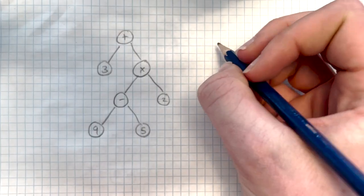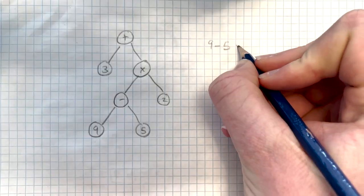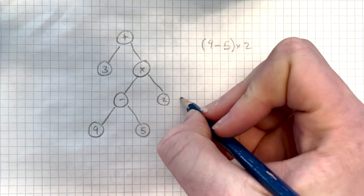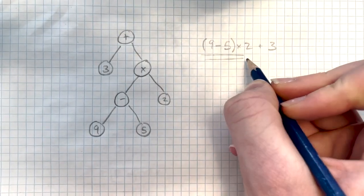In infix, this would be written 9 minus 5, times 2, you would need brackets here, times 2, plus 3. Simple enough, but you do need these brackets.